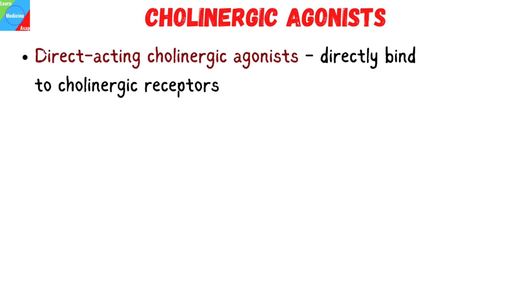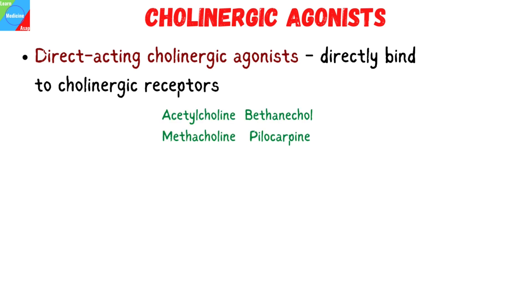Two types of cholinergic agonist agents exist. The first are direct-acting cholinergic agonists, which directly bind to cholinergic receptors. Examples include acetylcholine, bethanechol, methacholine, and pilocarpine.